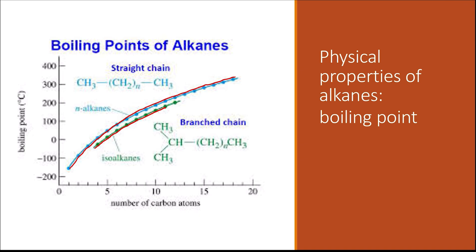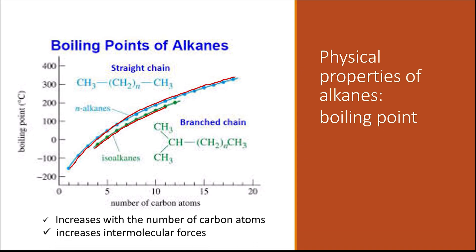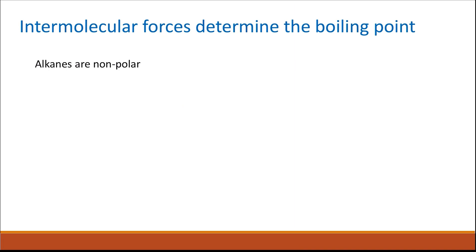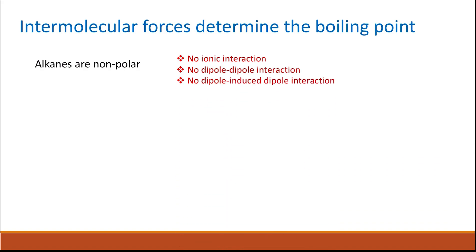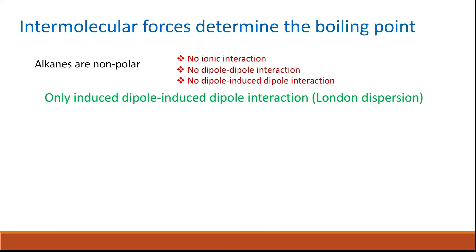Why do branched alkanes have lower boiling points than open-chain alkanes? Alkanes are nonpolar, so there is no ionic interaction, no dipole-dipole interaction, and no dipole-induced-dipole interaction, because all bonds are either carbon-carbon or carbon-hydrogen, and there is no significant difference in electronegativity between carbon and hydrogen.